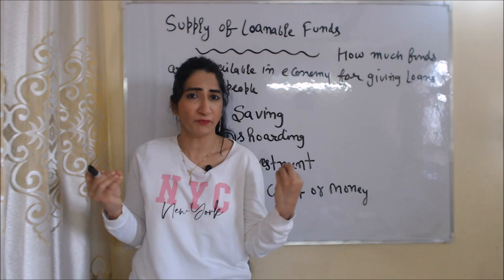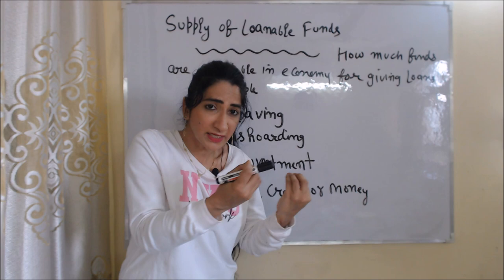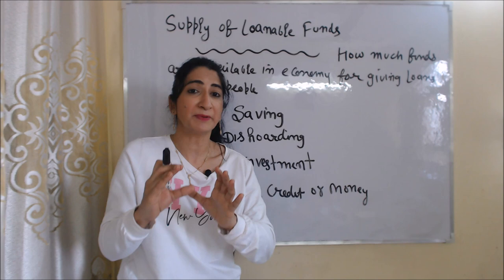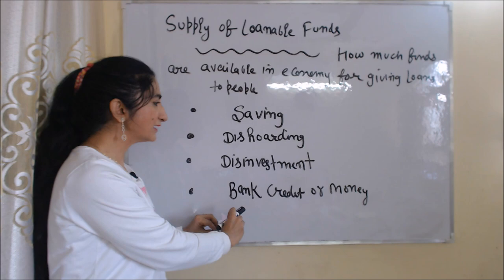Firstly, we are going to talk about what is supply of loanable funds. Supply of loanable funds means how much fund is available in the economy for giving loans to people. Supply of loanable funds depends on four factors: saving, disholding, disinvestment, and bank credit or money.